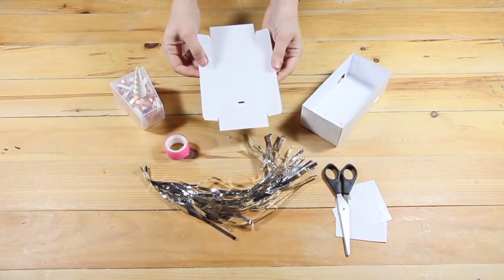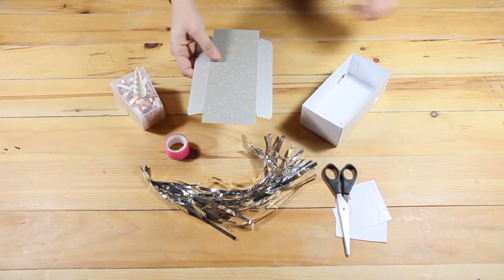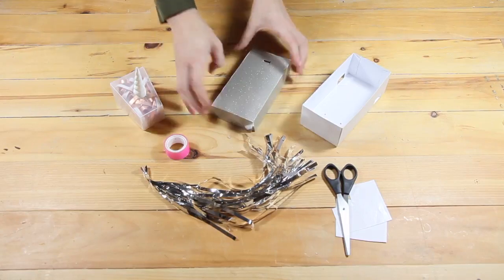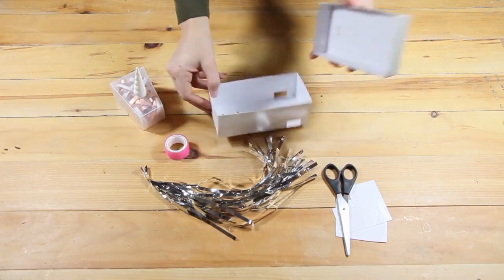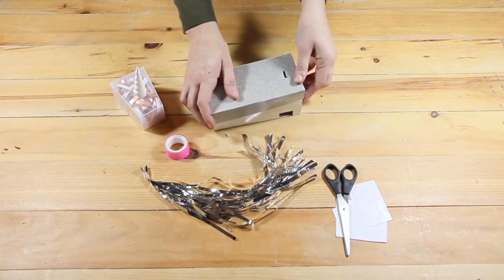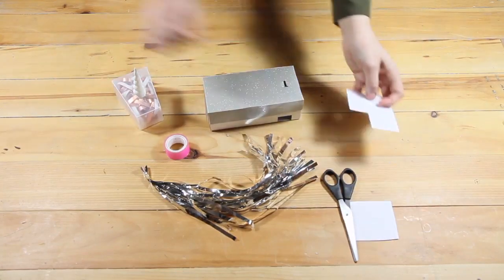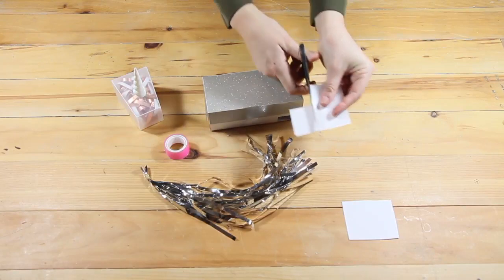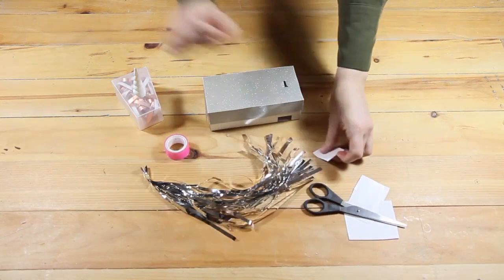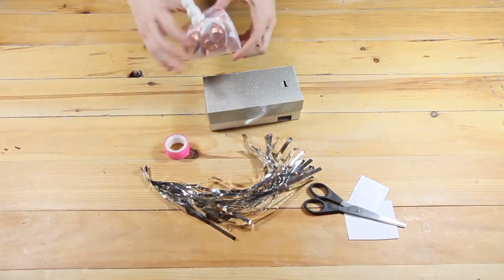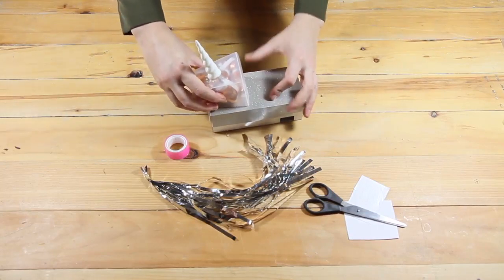The final piece of the body is the lid. And again we're going to fold along the scores and use sticky back plastic to secure it in place. Pop it on the top, make sure it fits nice and snugly, and we're ready to put the head on. We're going to use a little bit more sticky back plastic to firmly place the head on top of the body like so.